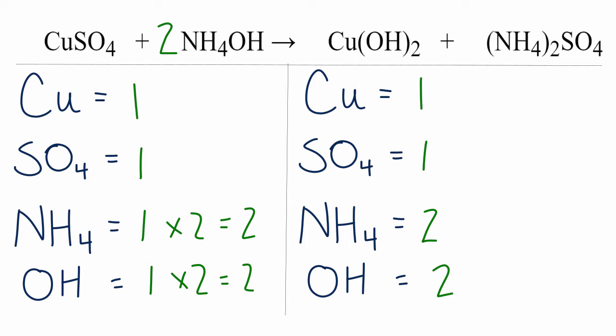And that makes it much easier to solve this equation. This is Dr. B with the balanced equation for CuSO4 plus NH4OH yields Cu(OH)2 plus (NH4)2SO4. Thanks for watching.